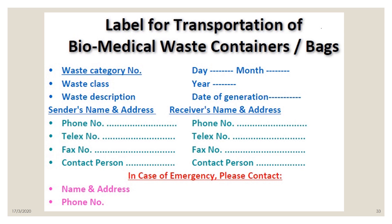Labeling before transportation is essential. The label must include waste category (e.g., infectious or regulated waste), waste class, waste description, month and year of collection, date of generation, place of origin, sender's name, phone number, contact person, and receiver's contact details. In case of emergency, it should indicate who to contact.